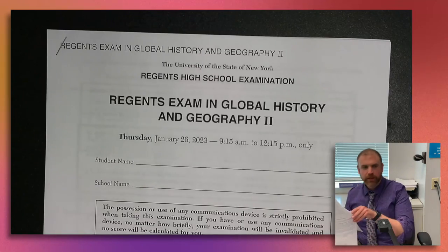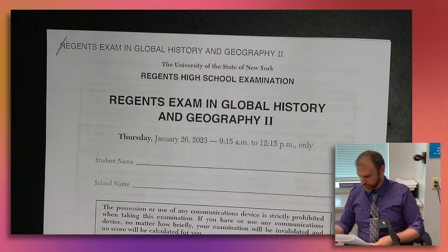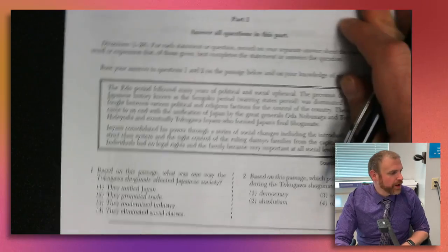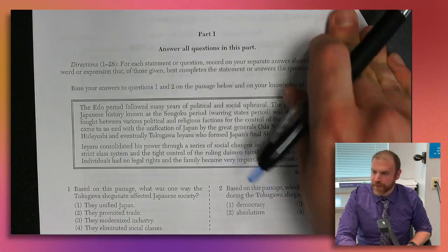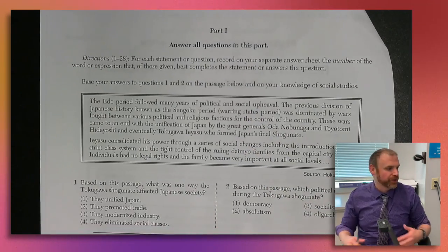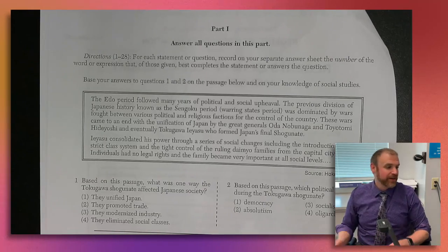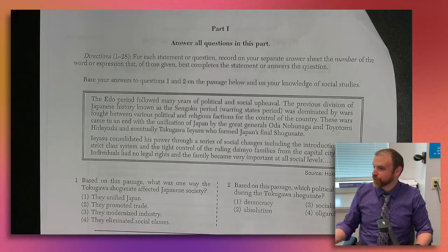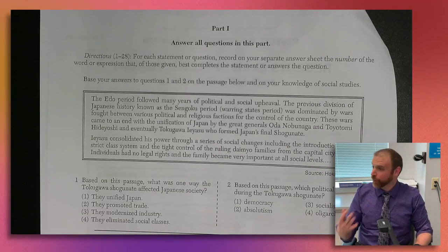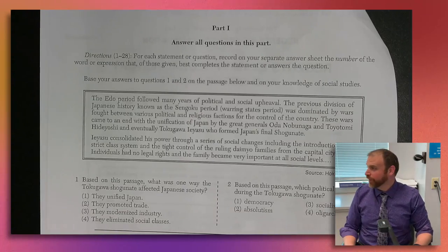All right, guys, so let's take a look at the first couple of questions. If you don't know, the Regents exam typically goes in chronological order. So early in the test, you'll see the world in 1750. As you get to the end of the multiple choice, you get a lot more current event type stuff — environmental problems, stuff going on in places like the Middle East.